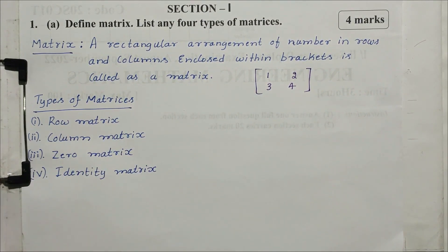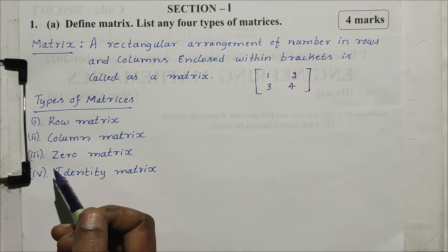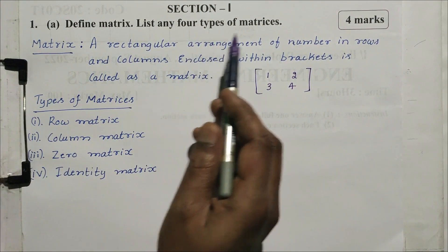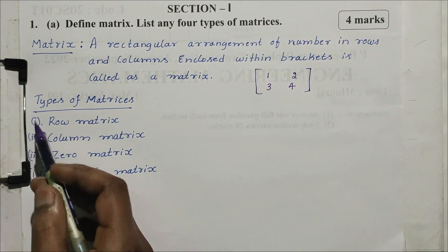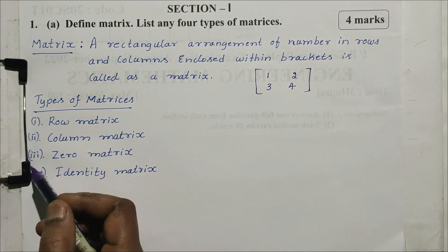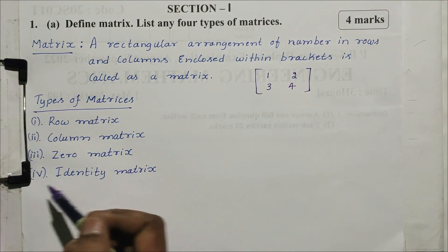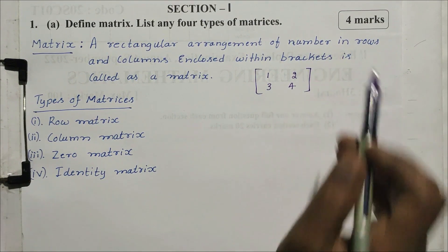Next, types of matrix. There are 4 types of matrix: row matrix, column matrix, zero matrix, and identity matrix. These are 4 types — so that's 4 marks.